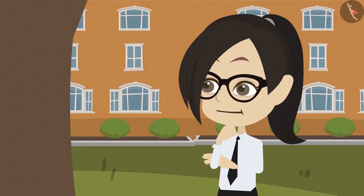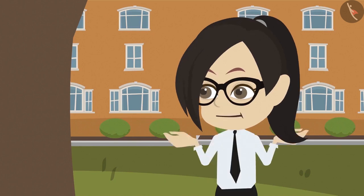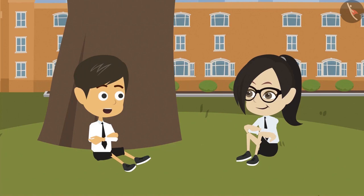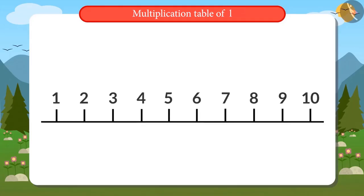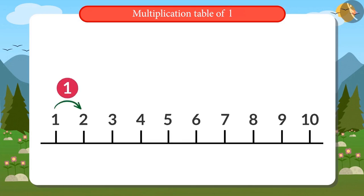Table of 1? There is table of 1 as well? I don't know about it. There is a table of 1 as well and it is the easiest one. If we add 1 to any number on the number line, we get its succeeding number.